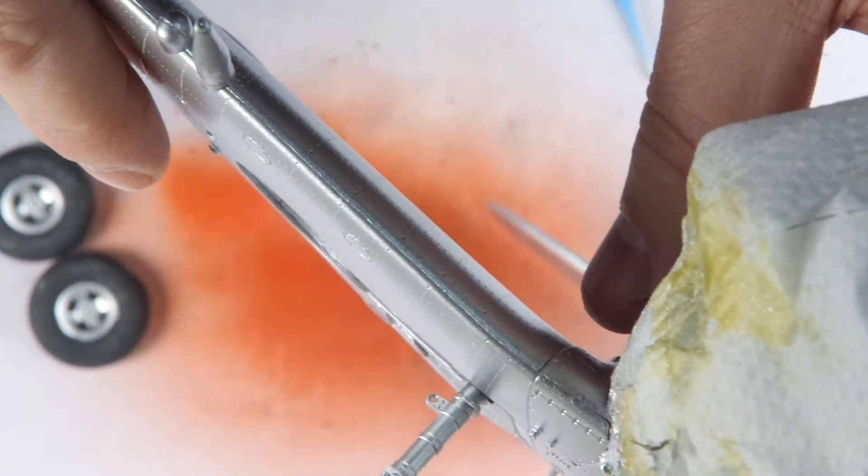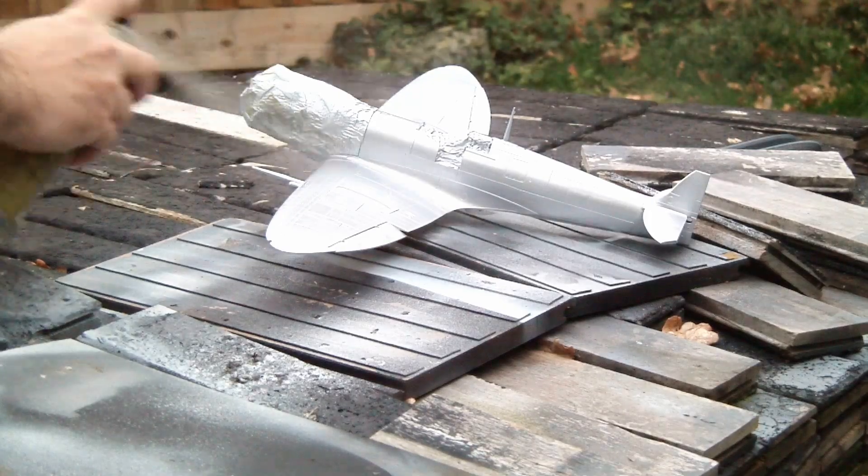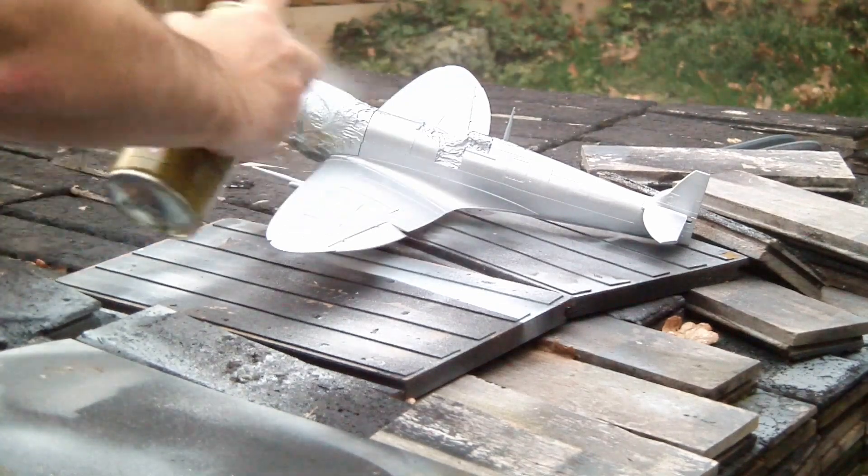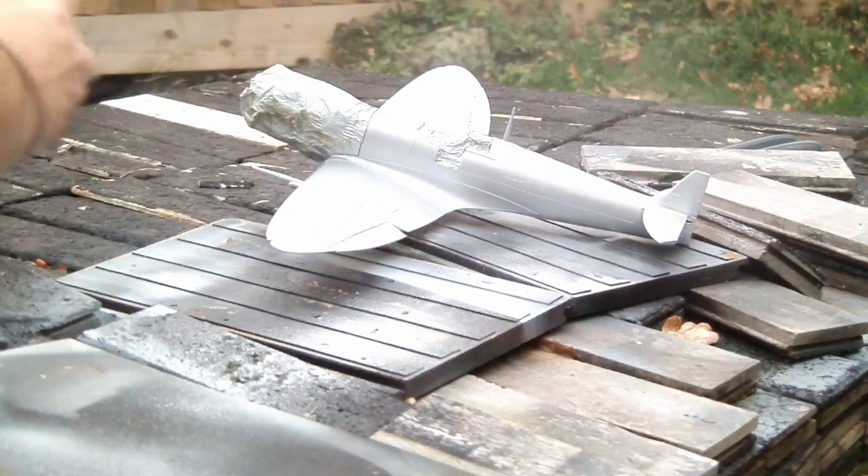I'll spare you more sanding, but the main areas that needed attention were the front wing joins, which were masked, sanded, and resprayed. When happy with these, I sprayed the entire aircraft with Army Painter matte coat, and when that was dry, Vallejo chipping fluid.